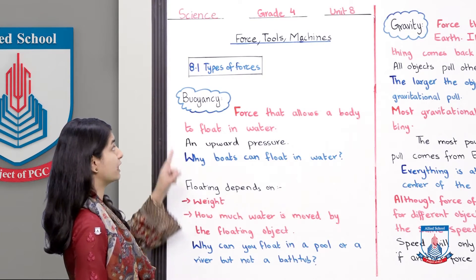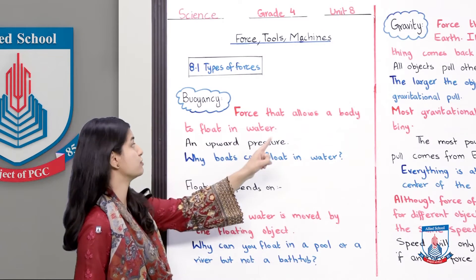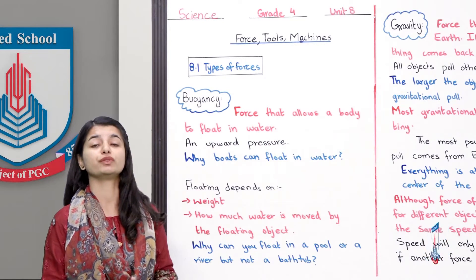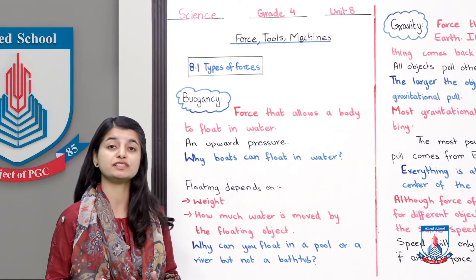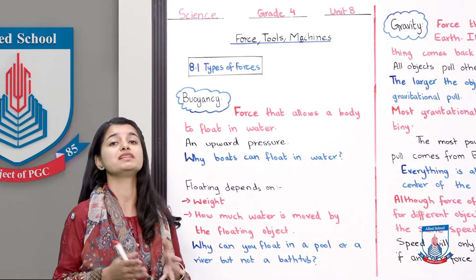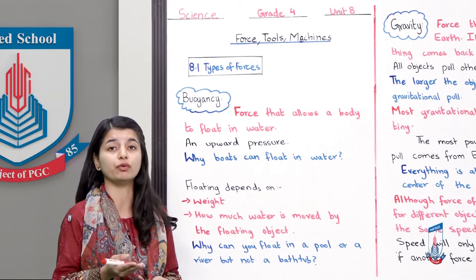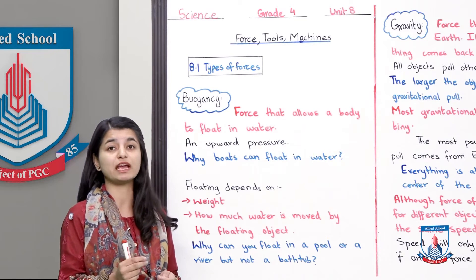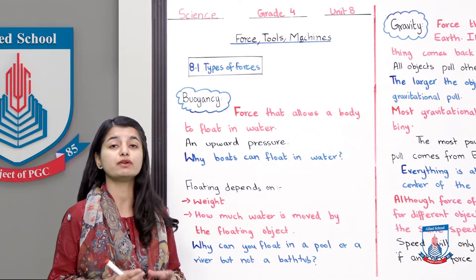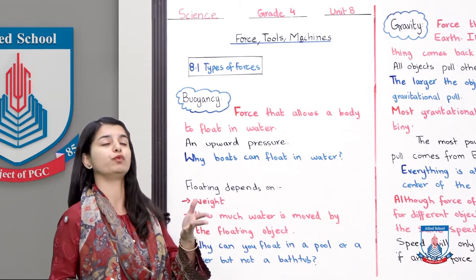The first force we will study today is buoyancy — the force that allows a body to float in water. Buoyancy is a kind of force that causes things to float on the water. If you sometimes swim in a river, you will notice that you can float. If you throw an object in a lake, it also floats. Why does it float? Because of buoyancy, which is an upward force.